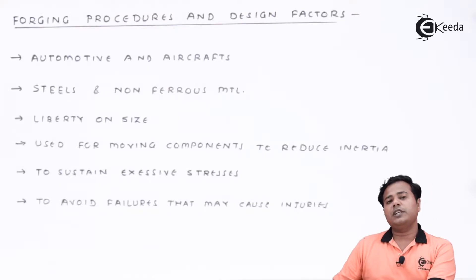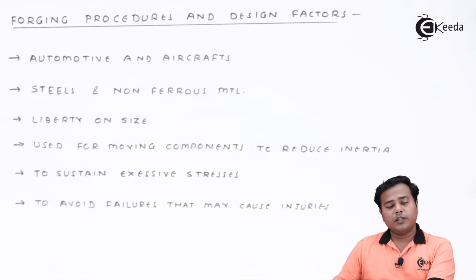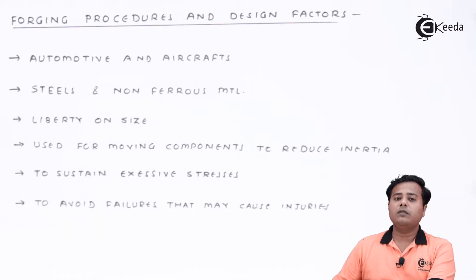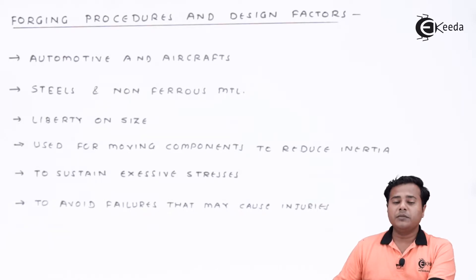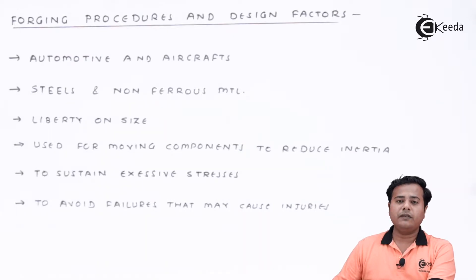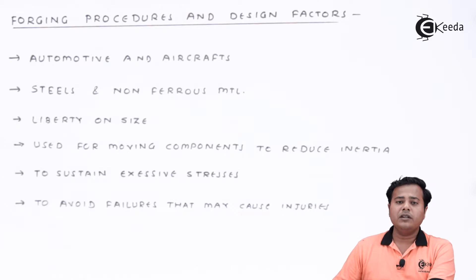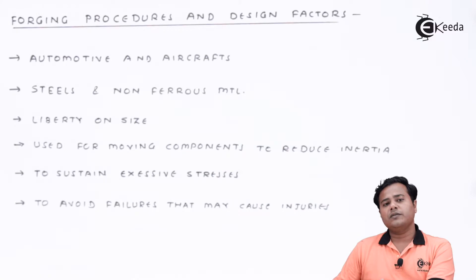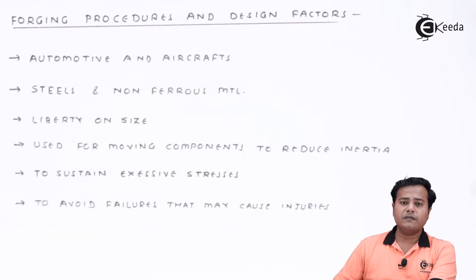Forging is a very simple procedure that we have already learned in the production processes and workshop practices. There is a die made up of hardened material, and the material that we need to forge is heated first and then shaped according to the die by hammering or pushing it inside. It is a simple procedure which takes place in the presence of heat and external force applied.